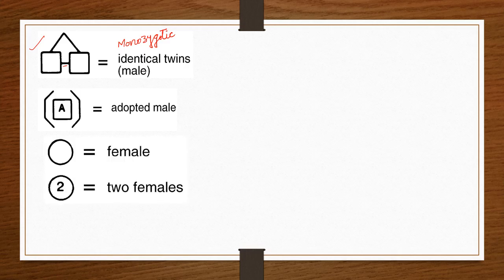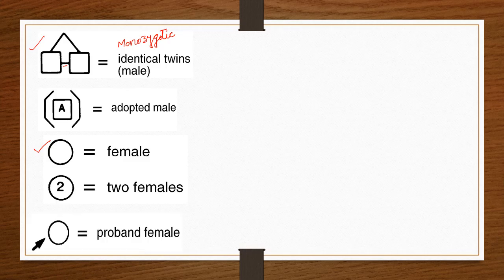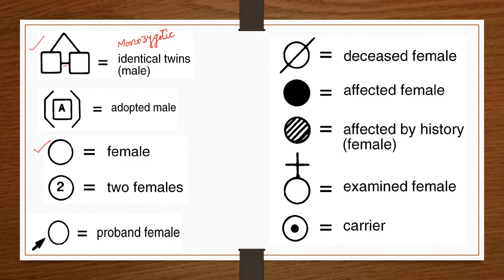A normal female is represented with a circle. A square is used for males and a circle for females. A circle with the number two inside represents two female individuals. A proband female — one whose genetic makeup has been worked out — is shown with an arrow pointing to a circle.